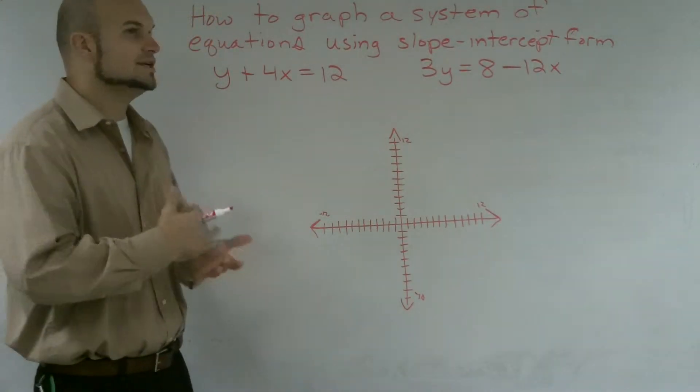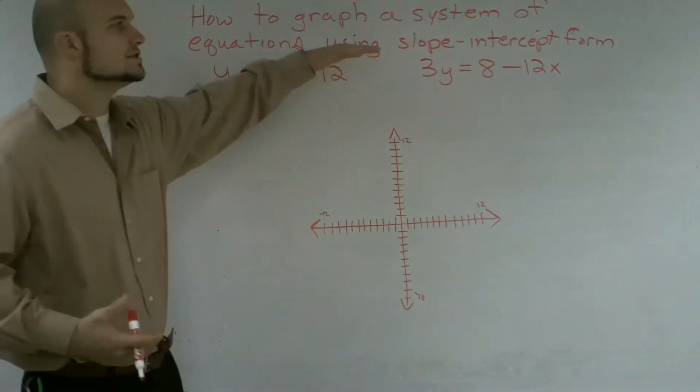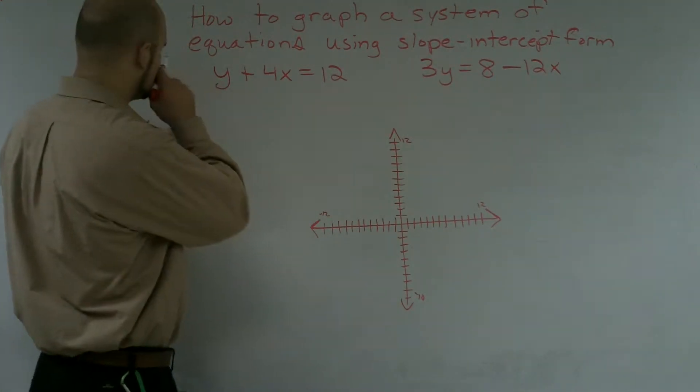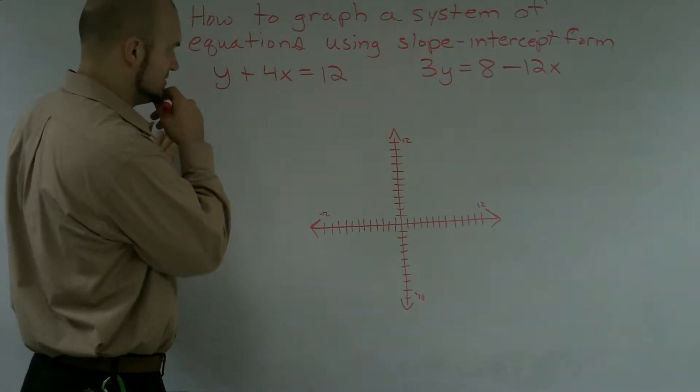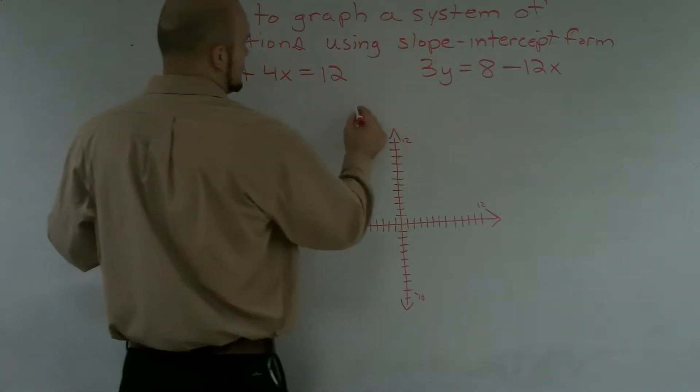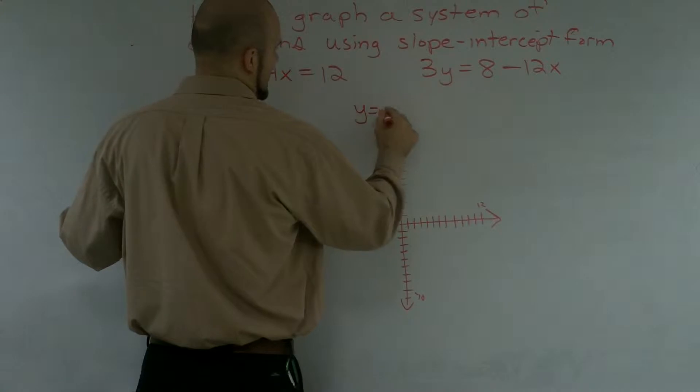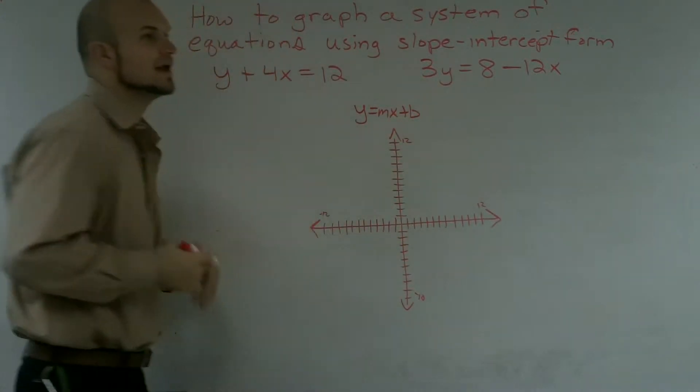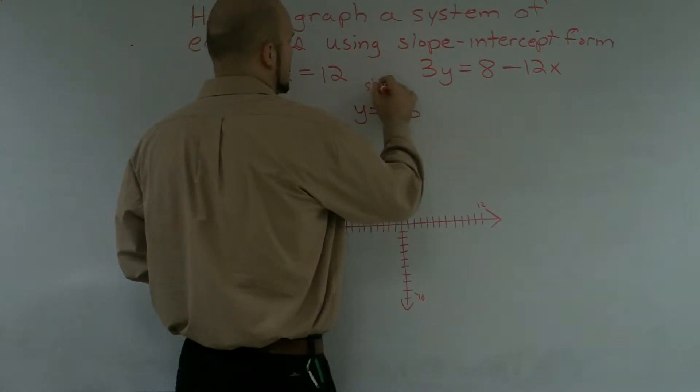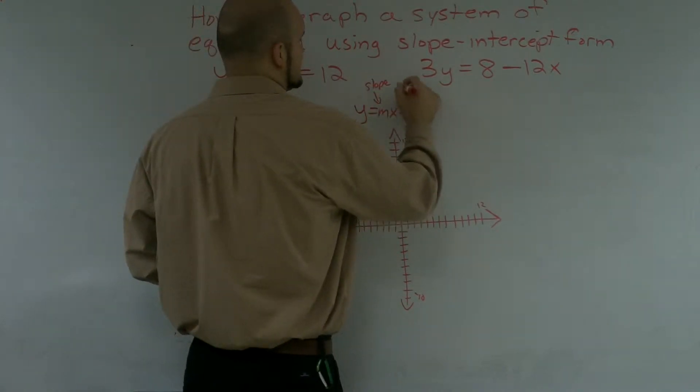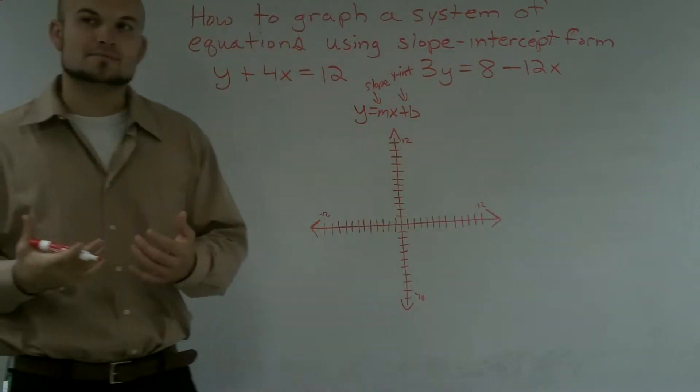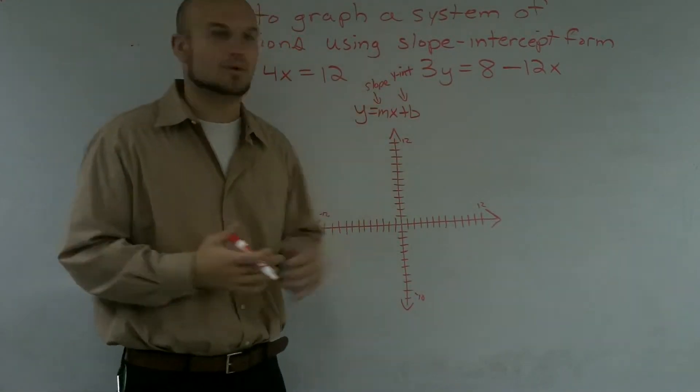So the first thing we need to do is we need to graph our lines. And when I say using the slope-intercept form, that means I'm going to want to put both my equations into y equals mx plus b form. Because when I put it in y equals mx plus b form, I now know that that's the slope, and then this is my y-intercept. And it's a very easy graphing process once I can determine those two points.